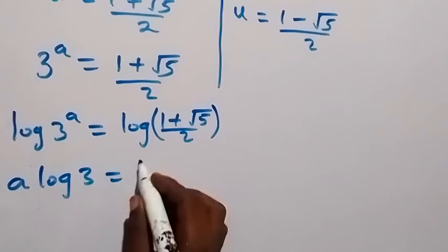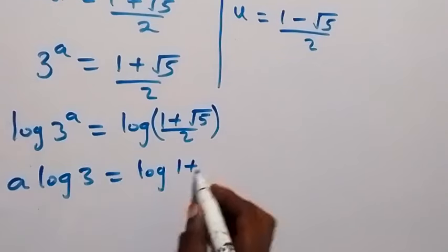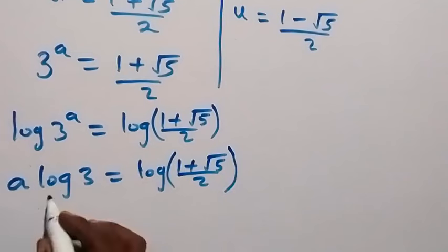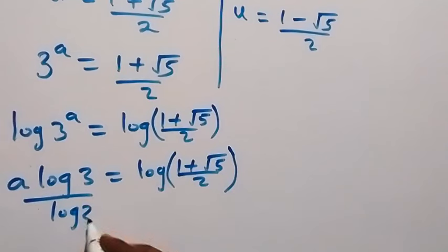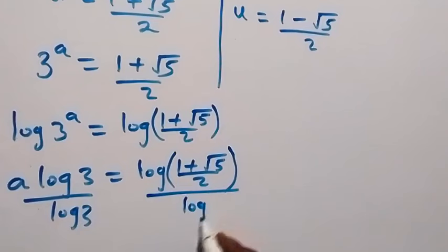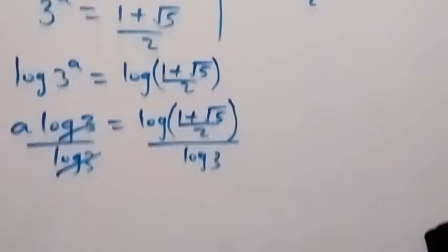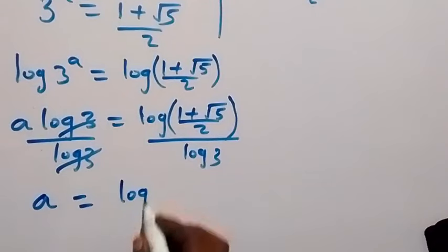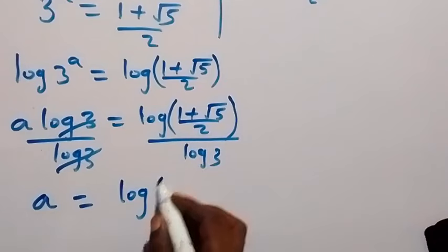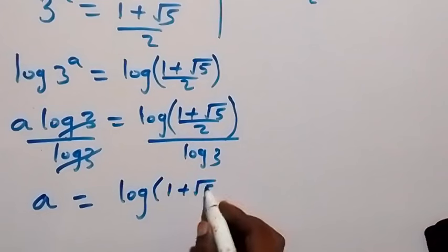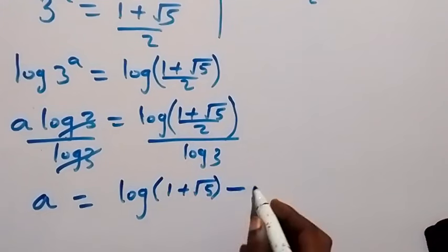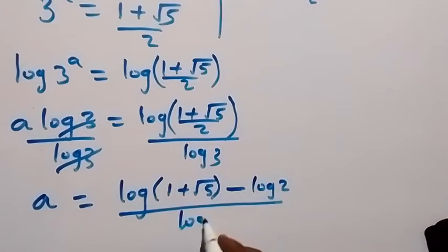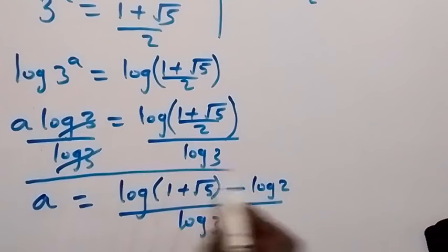Dividing both sides by log 3, log 3 cancels on the left side, leaving a. Using the law of logarithms, we separate the right side: a equals log of 1 plus root 5 minus log 2, all divided by log 3.